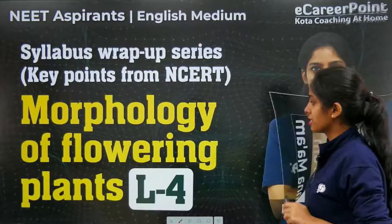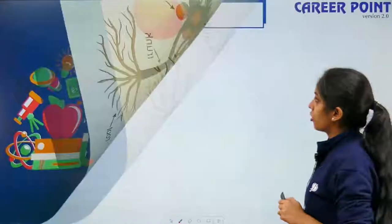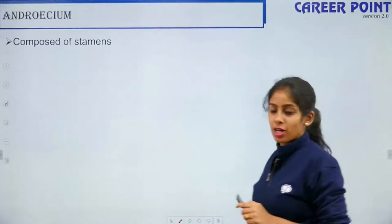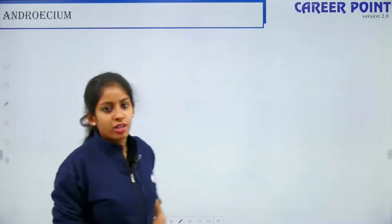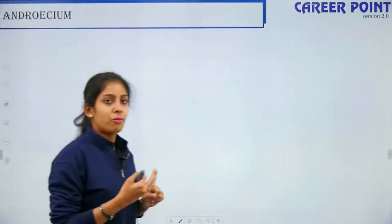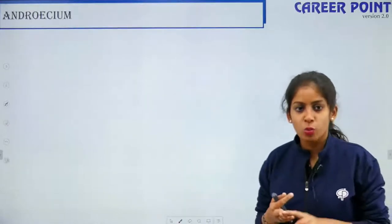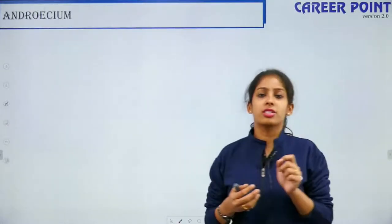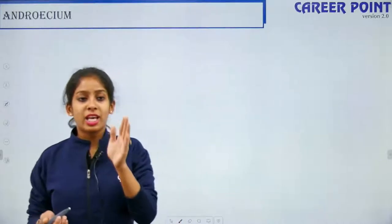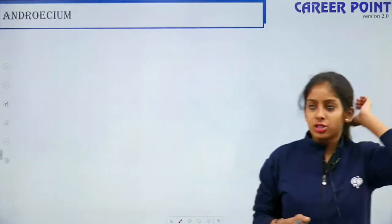This is Lecture 4. Before this, we spoke about the vegetative part of the plant — the root, stem, and leaf — their modifications, their functions, and terms like venation and phyllotaxy, types of leaves, etc.